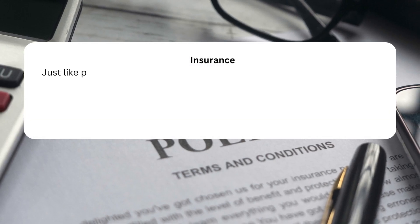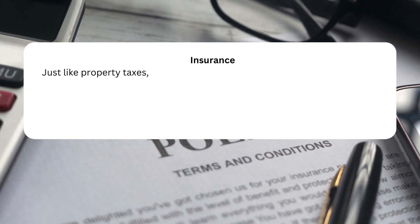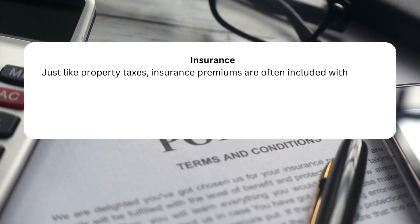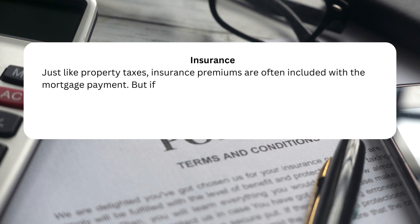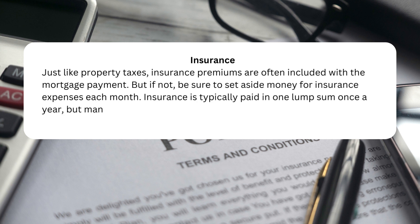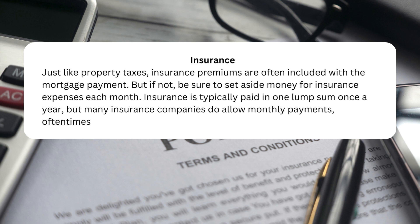Insurance: Just like property taxes, insurance premiums are often included with the mortgage payment. But if not, be sure to set aside money for insurance expenses each month. Insurance is typically paid in one lump sum once a year, but many insurance companies do allow monthly payments, oftentimes for an additional fee.